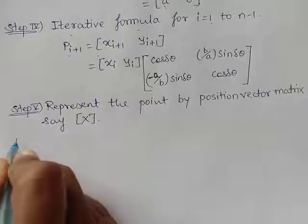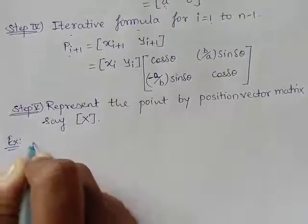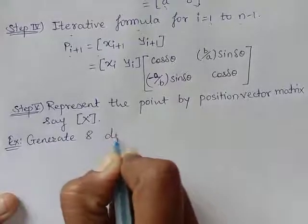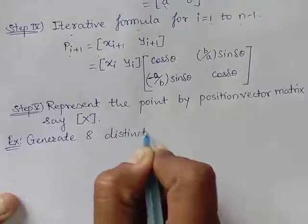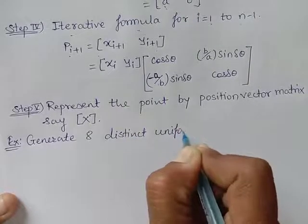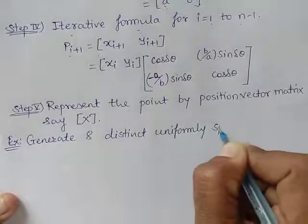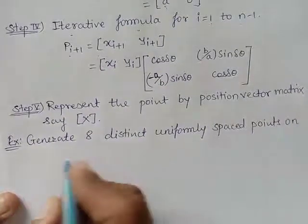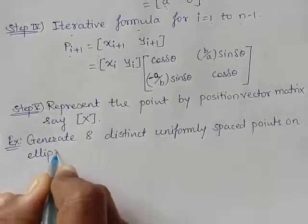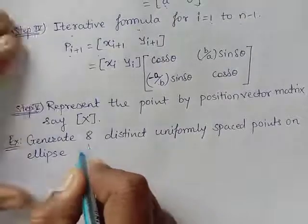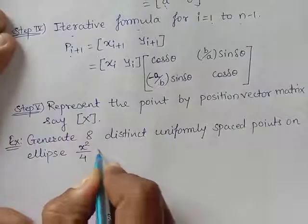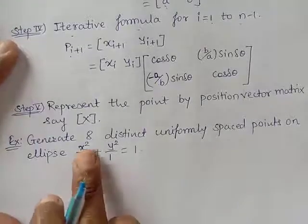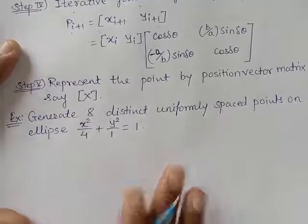Now let us take an example. Generate eight distinct uniformly spaced points on the ellipse x squared upon 4 plus y squared upon 1 equal to 1. This ellipse is given to us and we have to generate eight points. Now, solution.